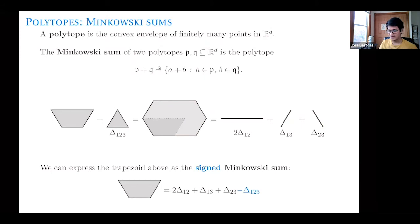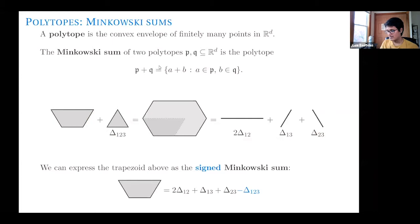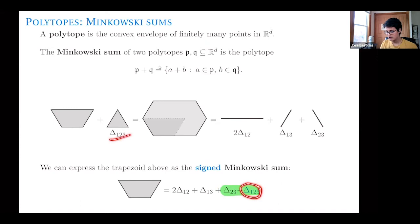I want to consider another way to write things: signed Minkowski sums. I'm going to allow moving things around in an expression. When we say these two sums are the same, I can say maybe this trapezoid equals the sum of these segments minus this triangle. The formal meaning is: this polytope plus the Minkowski sum of the things with a negative coefficient equals the Minkowski sum of the things with positive coefficients. Not every signed Minkowski sum has meaning — some won't represent a polytope.